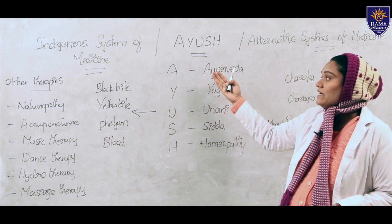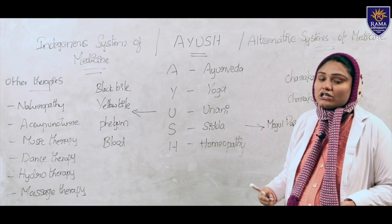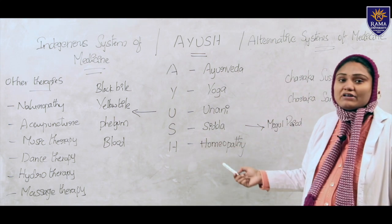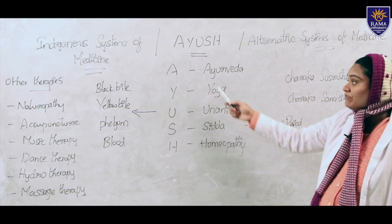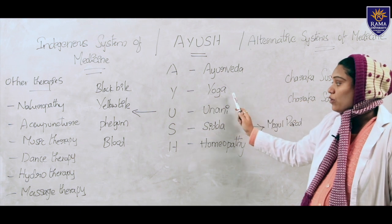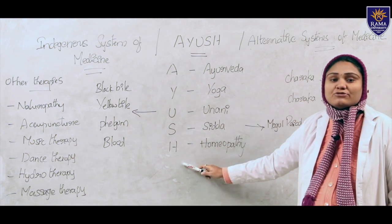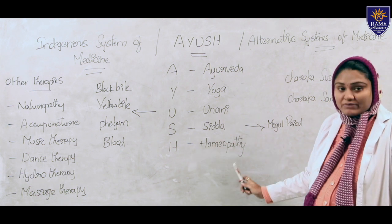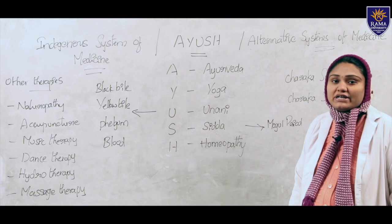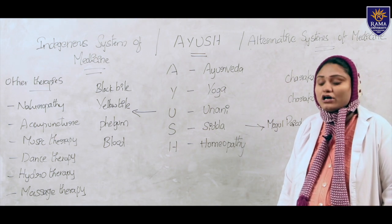Now we will see AYUSH in detail. What is meant by AYUSH? What are all the Alternative Systems of Medicines under AYUSH? We will discuss one by one. A means Ayurveda, Y means Yoga, U means Unani, S means Siddha, and H means Homeopathy. Apart from these, there are also many other therapies in the health sector to treat different disease conditions of Indian origin.